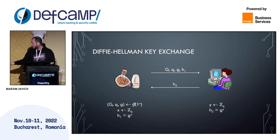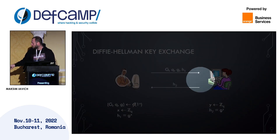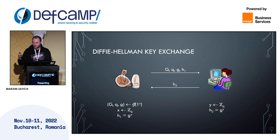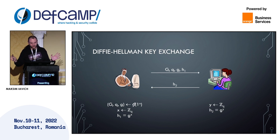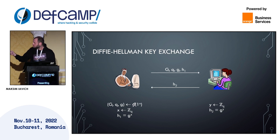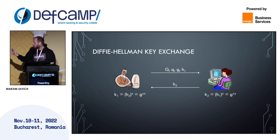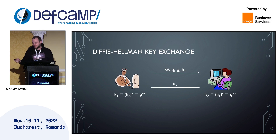Let us talk about Diffie-Hellman key exchange. It is based on a logarithmic problem — concretely the DDH (Decisional Diffie-Hellman) problem, which is more complicated than the discrete logarithm problem. Bob has G (the group), g (the generator), q (the order of the group), and he chooses a random x, computes g^x, and sends it to Alice. This is also visible to the hacker. Alice generates a random y and raises the generator to y. Now Bob has g^x, Alice has g^y, and the hacker sees both. Bob takes g^y to the power x and gets g^(yx); Alice takes g^x to the power y and gets g^(xy) — both values are identical, so they have shared the key and the hacker cannot understand what that key is.